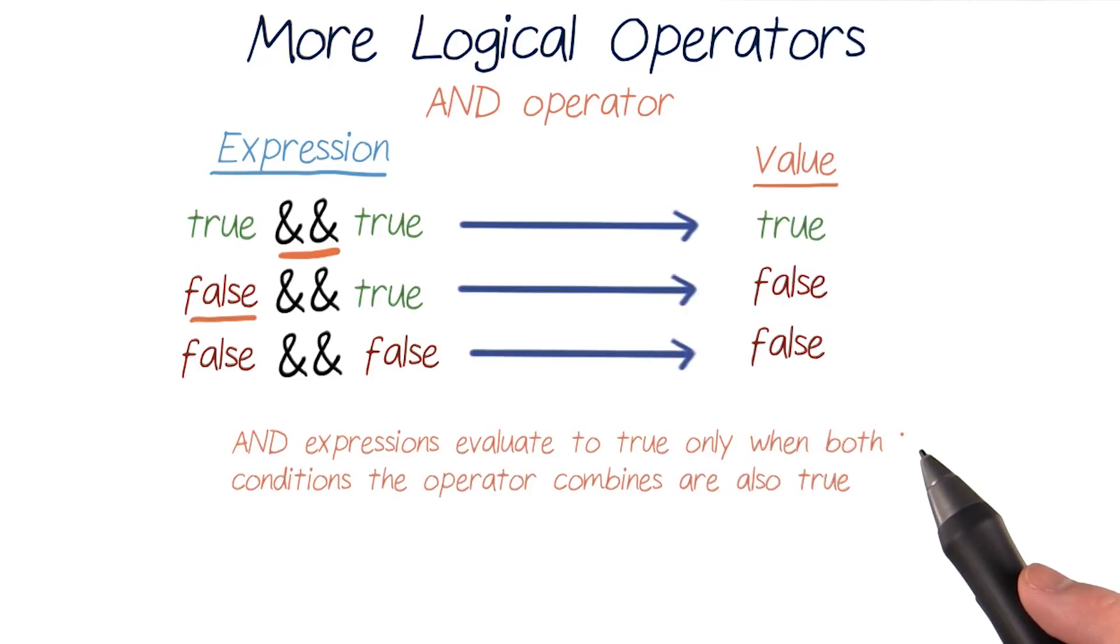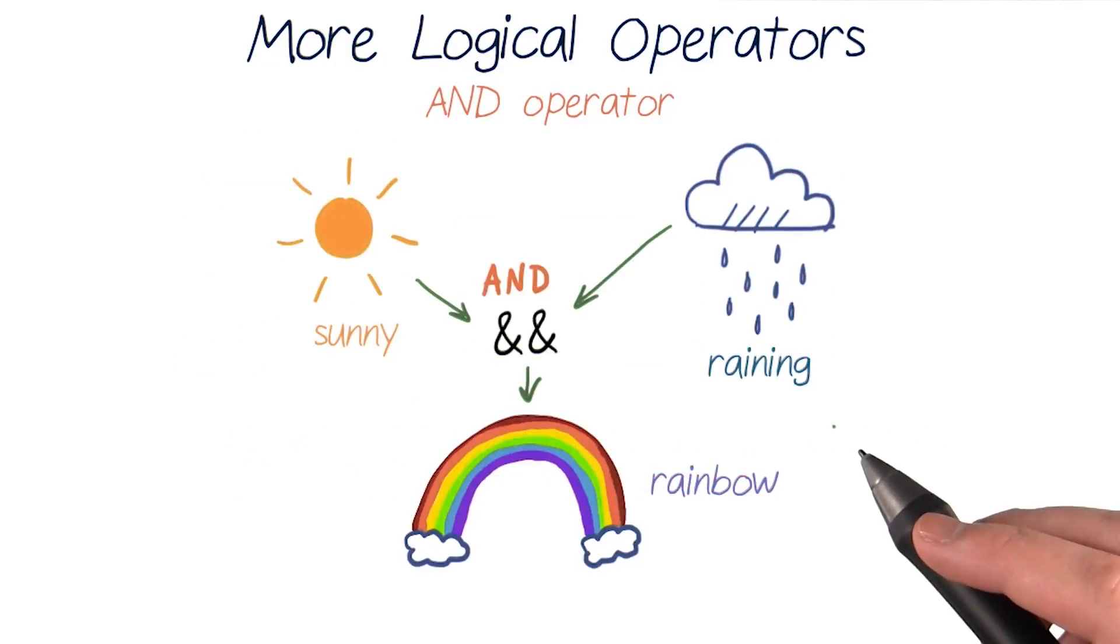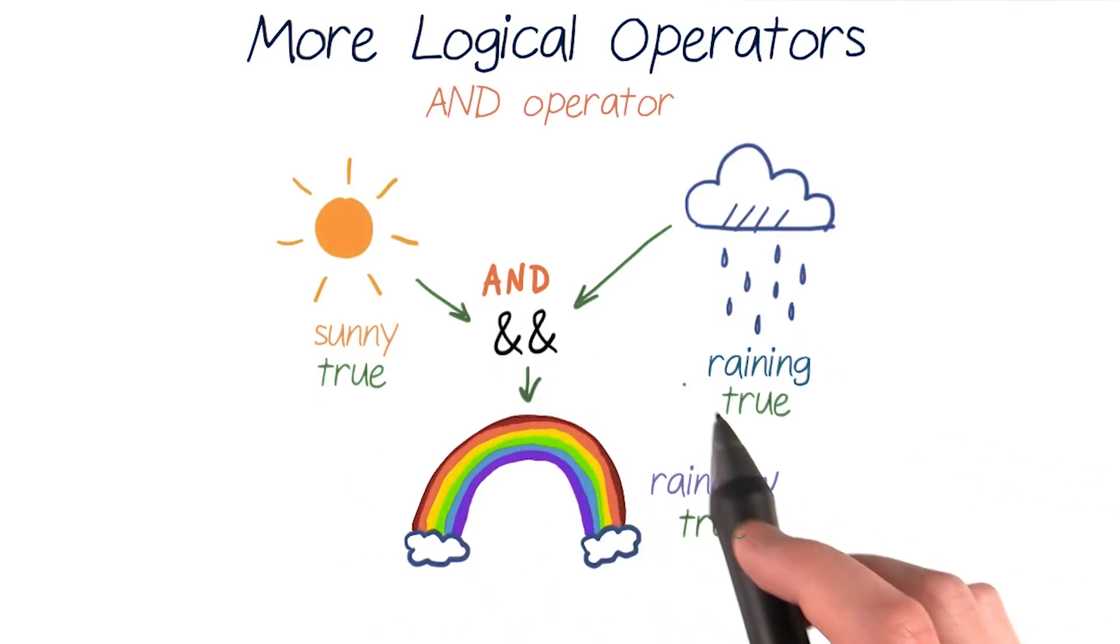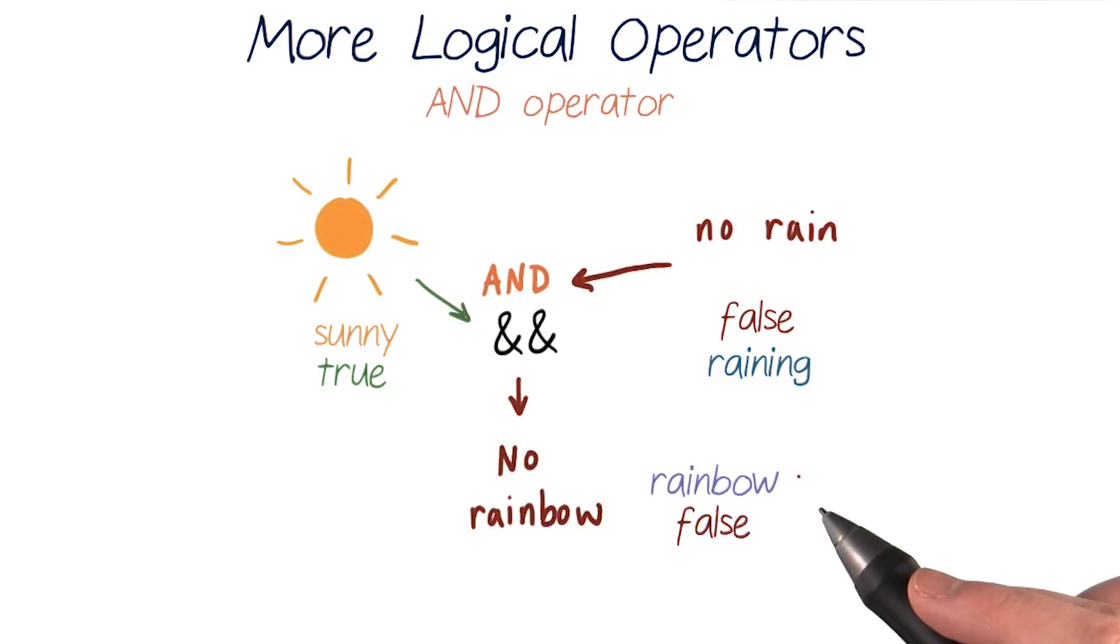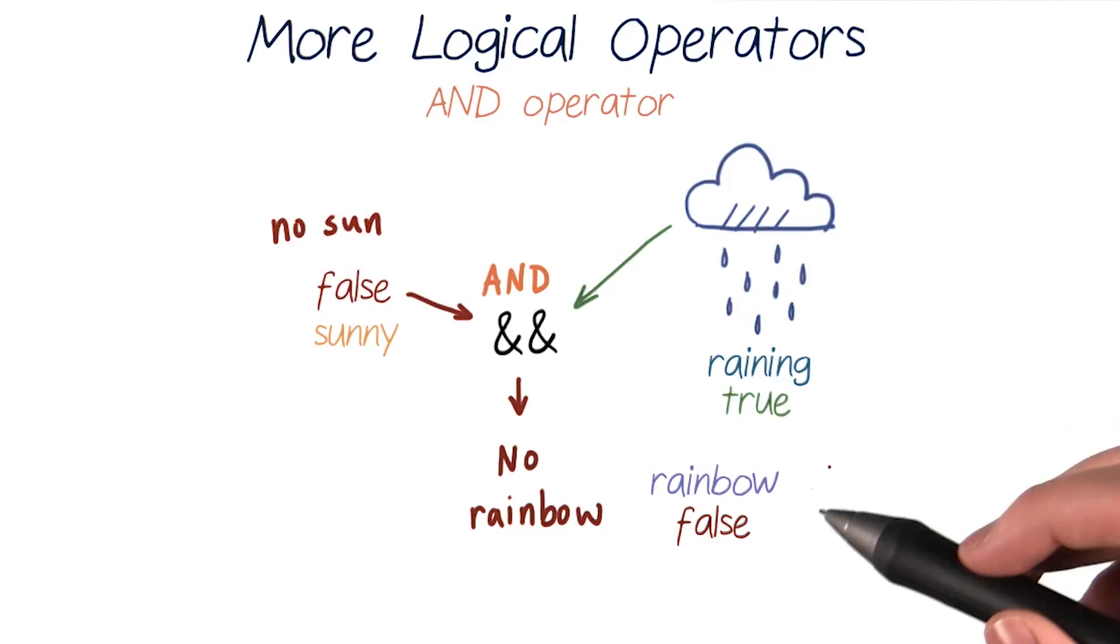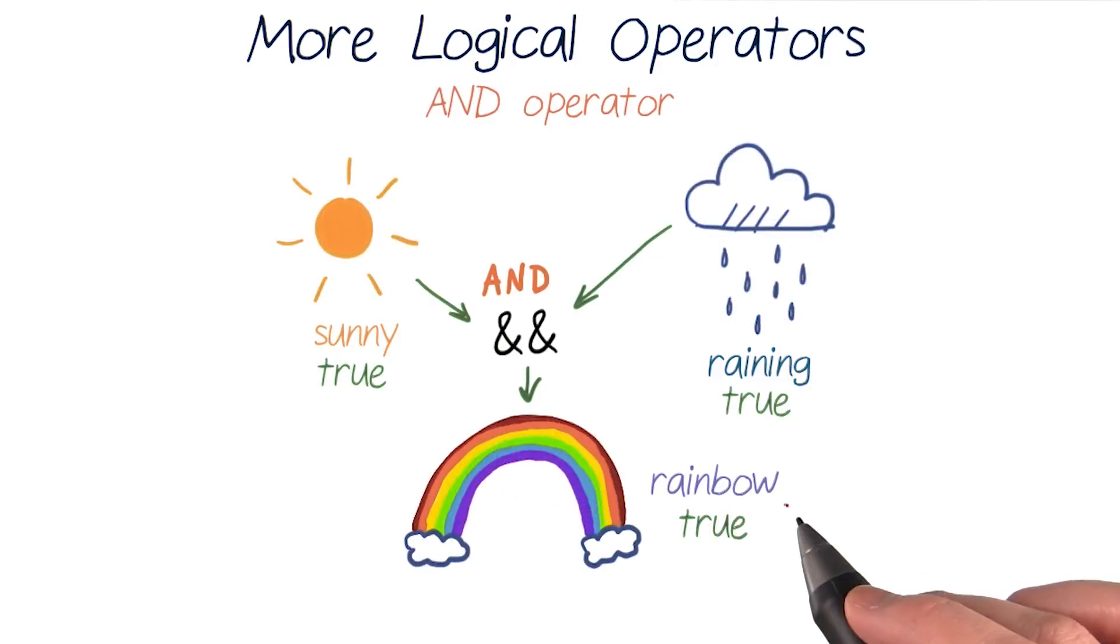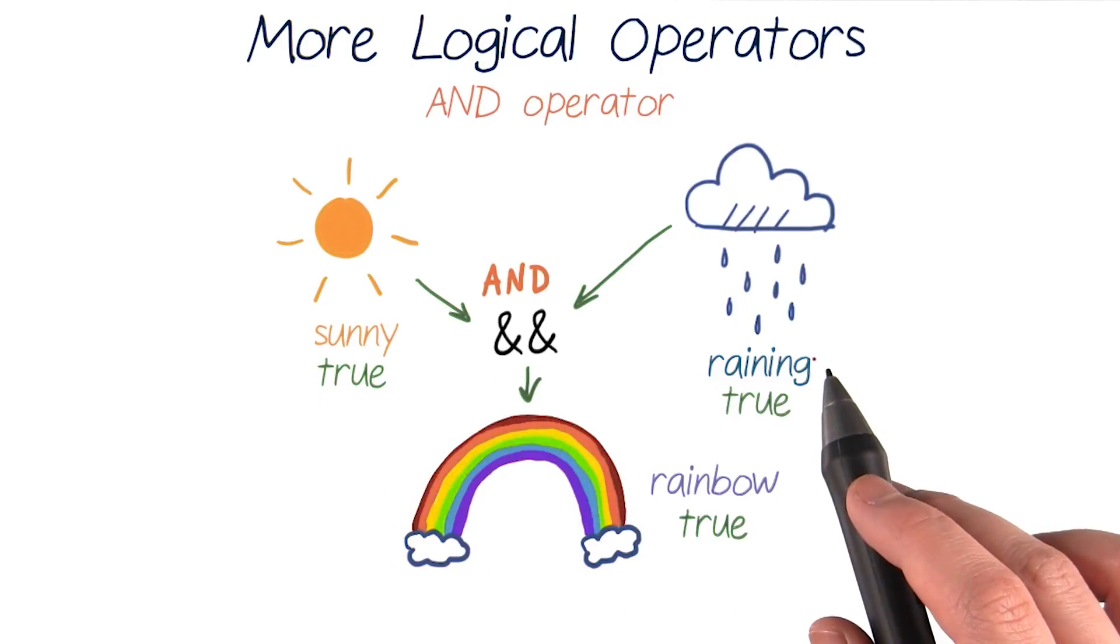It might be helpful to think of how logical operators like an and can be applied to real life scenarios. Let's take the weather as an example. If it's sunny and raining outside, then this will create a rainbow. So if it's true that it's sunny and it's true that it's raining, we'll create a rainbow. But if only one of these conditions is true, like if it's only sunny, then no rainbow will be created. Same goes for if it's only raining. And if neither condition is true, then still no rainbow will be created. The only way a rainbow is created is if both sunny and raining conditions are true.